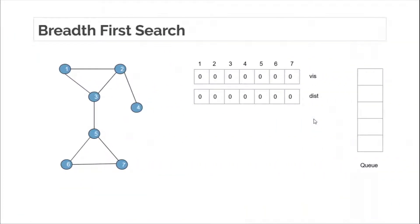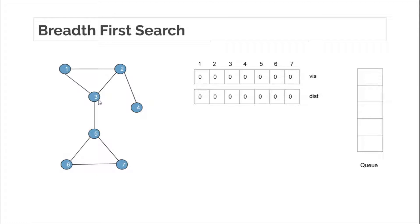BFS is really easy. All we do is use a queue for the implementation of BFS. We also have two arrays: a visited array and a distance array. The distance array saves the distance of the i-th node from the source node or root node. BFS does traversal in a level-order fashion — first it traverses all nodes at level 0. The level is the distance of a node from the root node.